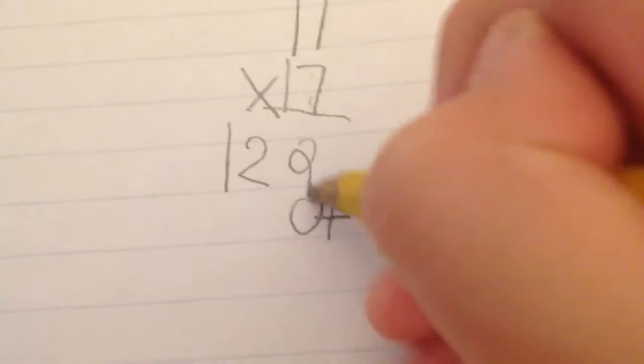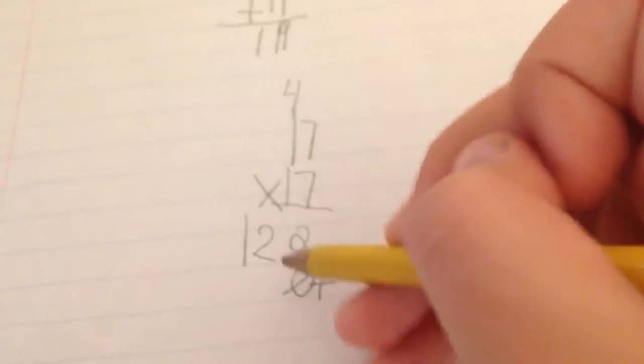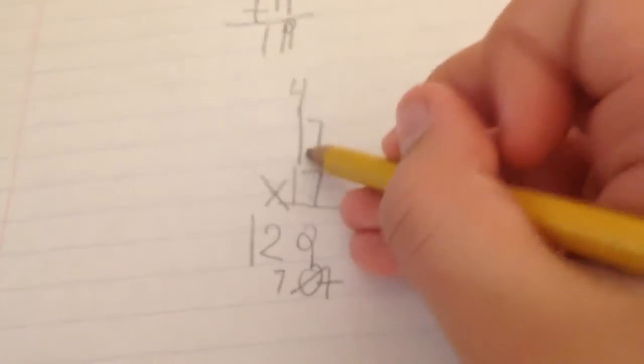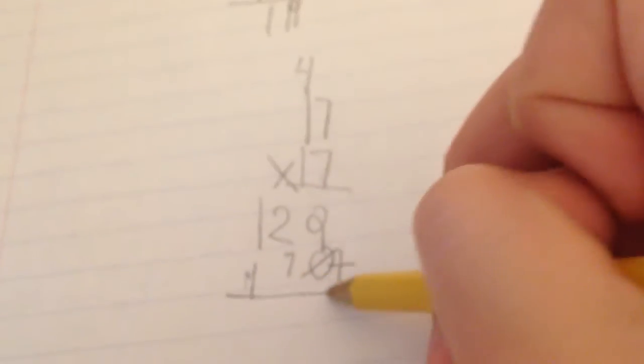Now what do I do with the other 10? Listen really carefully. You're going to put a plus and a 0 under the 9. 1 times 7 is 7. 1 times 1 is 1. Add them together. 9, 2. That's your final answer.